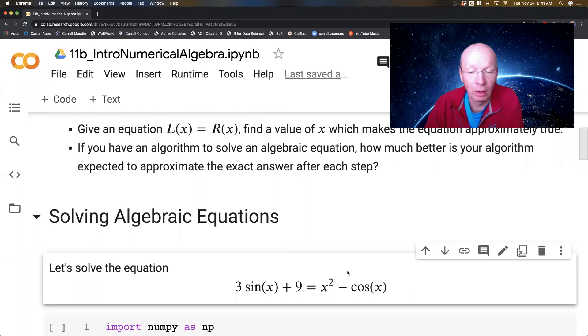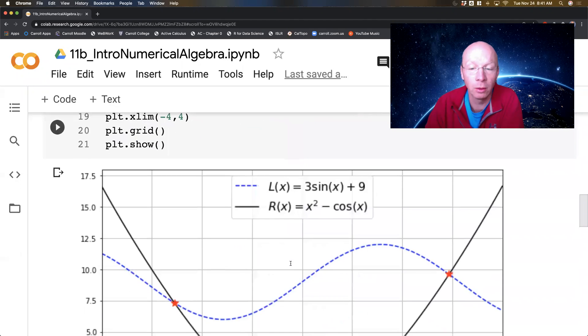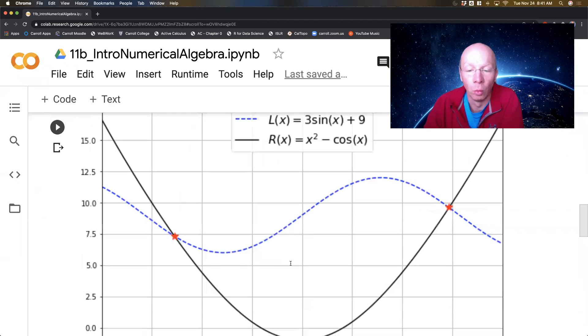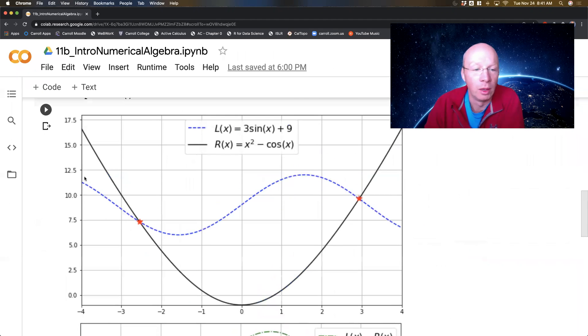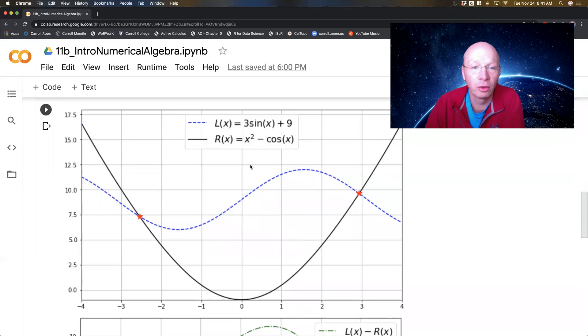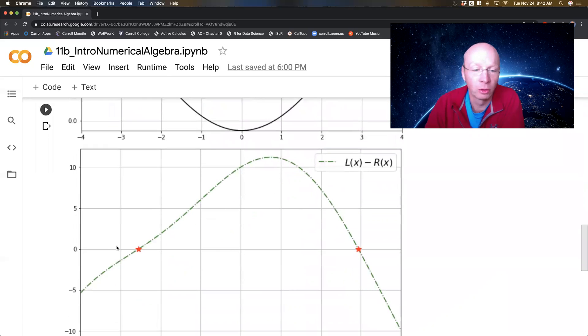Now what I'm going to do is take the right hand side and subtract it over to the left. You can ignore all of my code here. So what we're looking at—let's zoom out one step here—the blue curve here is the 3 sin(x) + 9. The black solid curve is the x squared minus cos(x), and if I subtract left minus right, I get this particular curve.